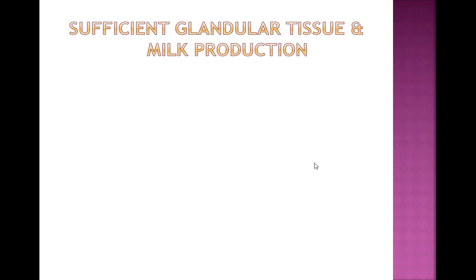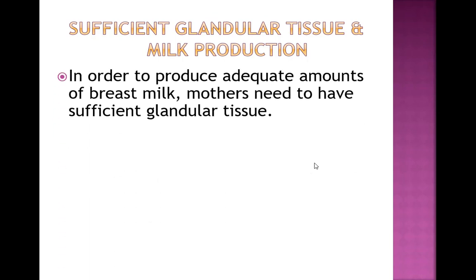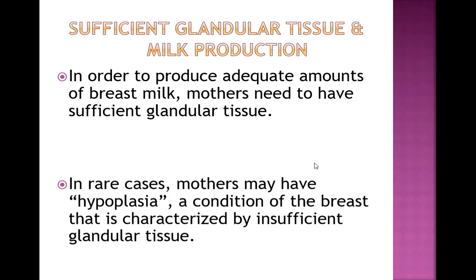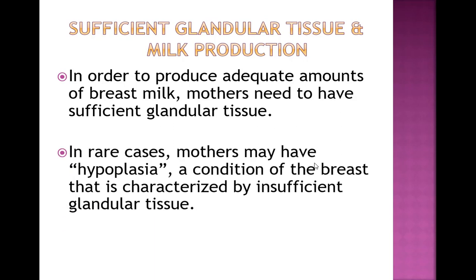The next component important for galactopoiesis is sufficient glandular tissue. In order to exclusively breastfeed, a mom needs to have sufficient glandular tissue. Without it, she won't be able to make sufficient amounts of milk to exclusively breastfeed her baby.